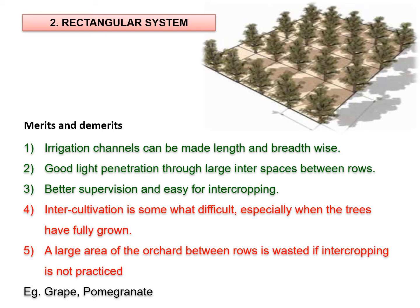A few advantages of the rectangle system are: irrigation channels can be made both length-wise and width-wise. Good light penetration is possible because wider space is available between the rows. Better supervision is also possible and it is easier to manage. A demerit is that intercultural operations are somewhat difficult, especially when the trees have fully grown.